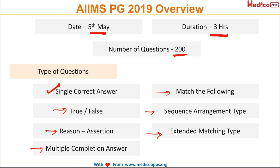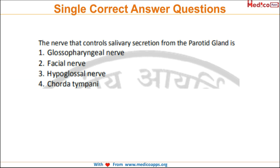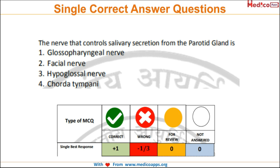Let us look at each one and understand in detail how the question will look and what positive or negative marks are associated with each. For the single correct answer question, it typically has four options. The prospectus mentions that an incorrect response will have a penalty of 1/3, so the negative is minus 1/3 — that is 33% negative. This is very important as it will decide how you attempt the paper.